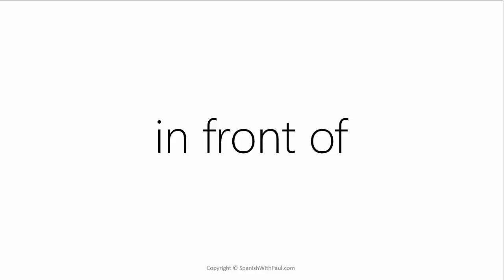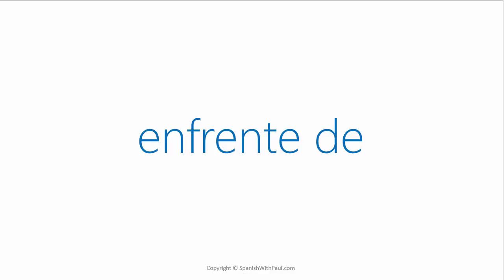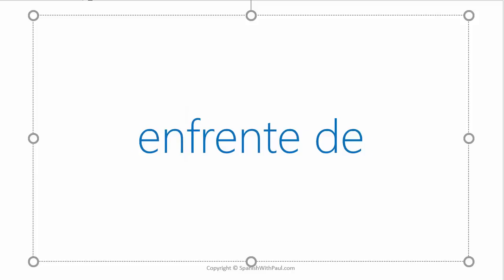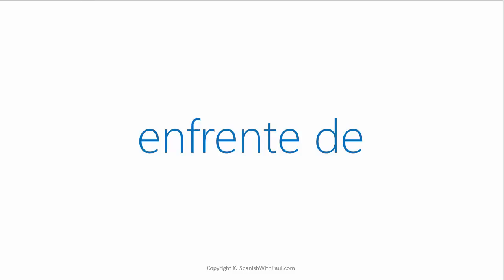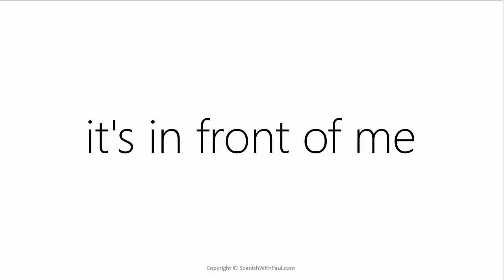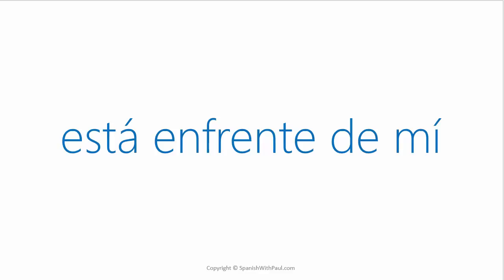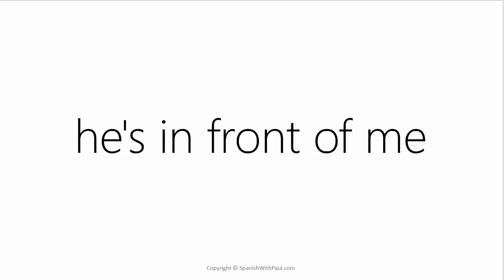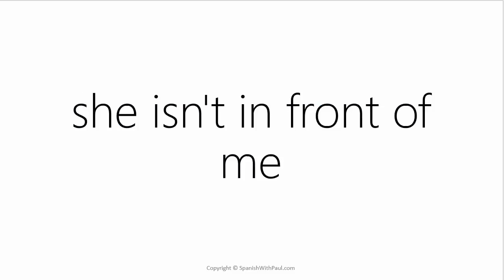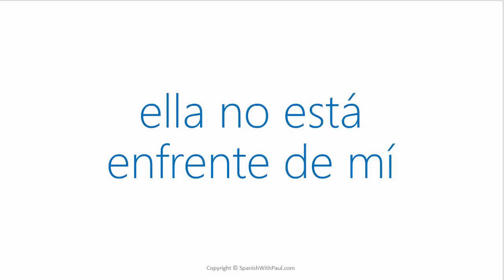The phrase 'in front of' in Spanish is 'enfrente de'. You can see how two words got contracted together here — we have 'en frente de', meaning 'in front of', but you'll commonly see it contracted into one word: 'enfrente de'. To say 'me' in Spanish is 'mí' — it's the exact same sound, just a difference in spelling. How would you say 'it's in front of me'? Está enfrente de mí. What about 'he's in front of me'? How would you say 'she isn't in front of me'? Ella no está en frente de mí.